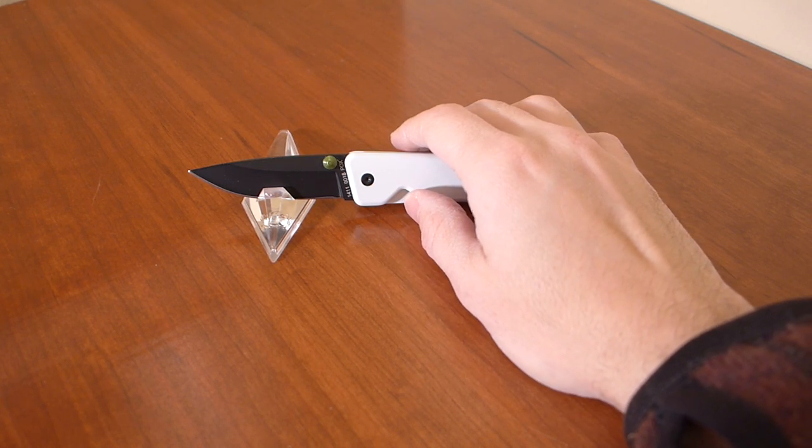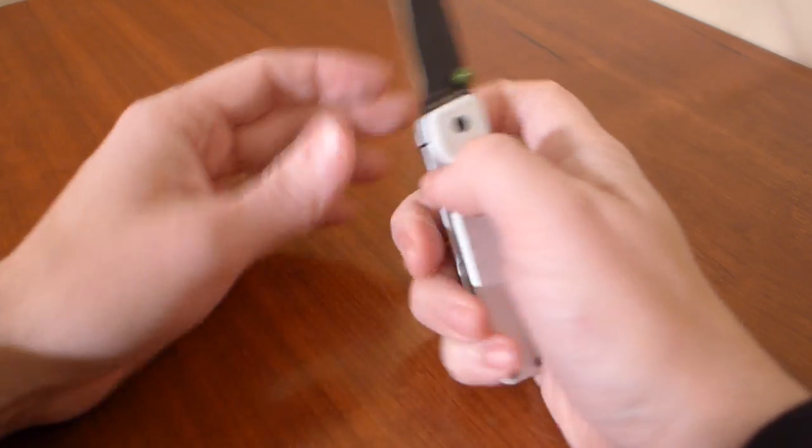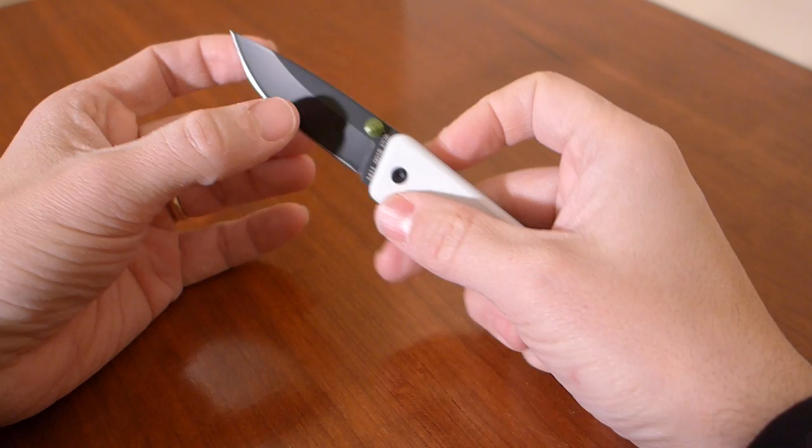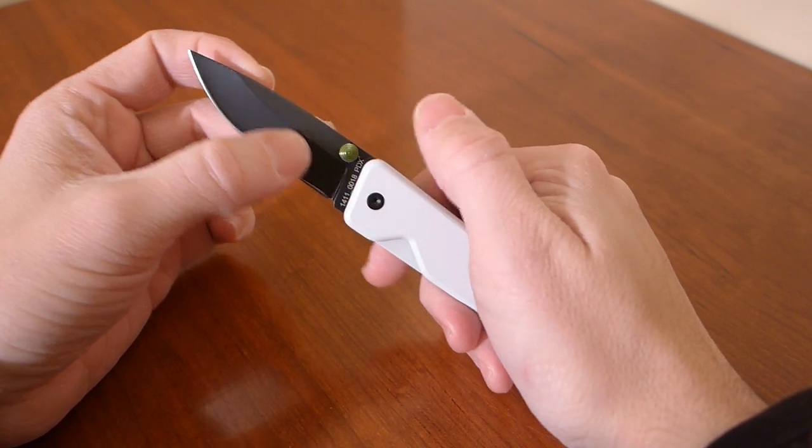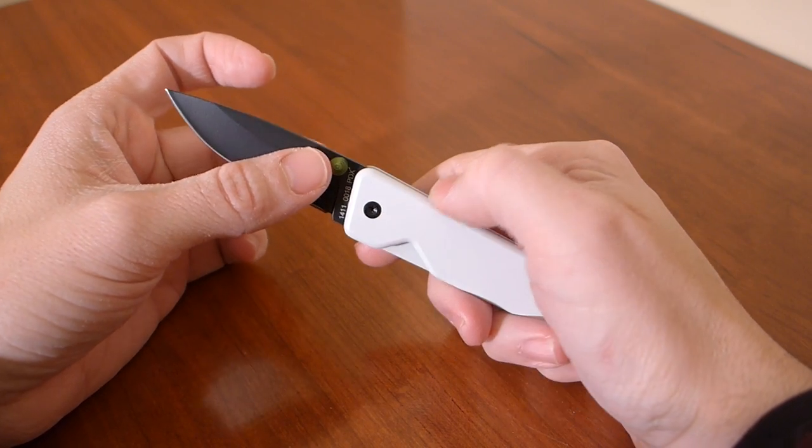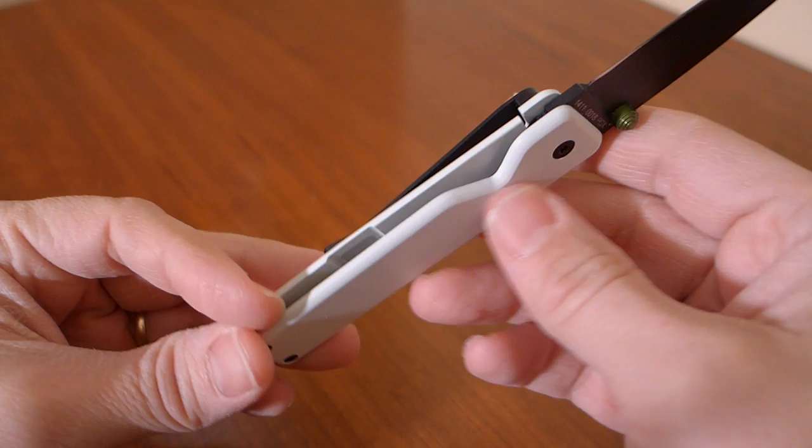The steel this knife runs is D2, and the knife is a titanium frame lock, sort of like the Sebenza. As you can see, it has a black coated blade, this signature green lime green thumb stud, and then it just has this very nice white clean look to it.